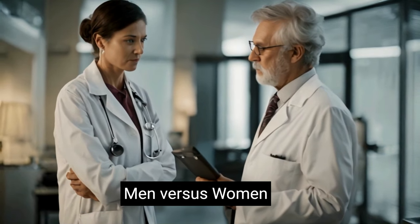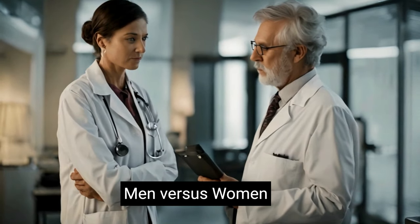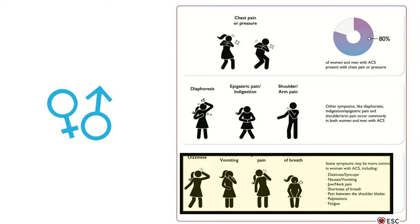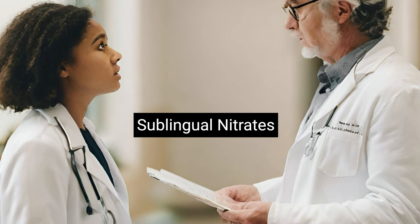Are there differences between men and women in ACS symptoms? Over 80% of both men and women with ACS present with chest pain or chest pressure. Other common symptoms — sweating, shoulder pain, arm pain, indigestion, epigastric pain — are relatively common in both sexes. While some less common symptoms at presentation may be more frequent in women, these differences are minor and do not support using women-specific chest pain characteristics for early MI diagnosis.